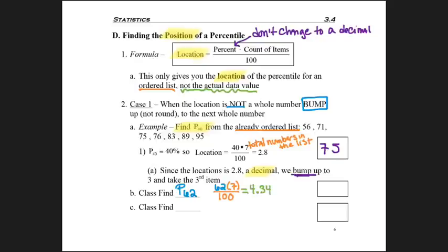So I'm supposed to go to the 4.34 number. There's no such thing. There's a fourth number and a fifth number. So again, not rounding, but bumping up. I'm going to take the next whole number, which would be the fifth number.